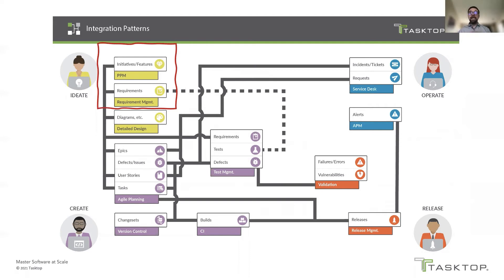Looking at just one of these many integration patterns, we're looking to connect planning to delivery. Some initiatives or features are likely to be defined in a product portfolio or product roadmapping tool. These items likely represent the requirements for the product and the development teams. This integration pattern mirrors the high-level planning items managed in that PPM or roadmapping tool directly into the requirements management tool, from which they can be broken down into work items like epics and stories. Both parties benefit from a seamless flow of work from the planning teams to product management and development and testing.